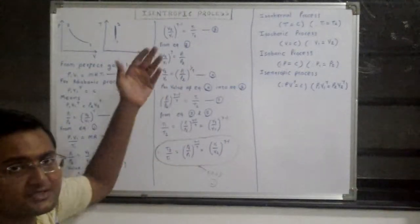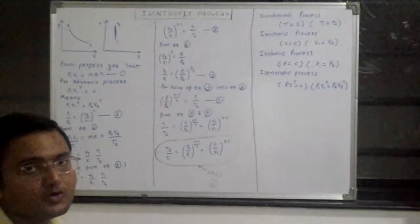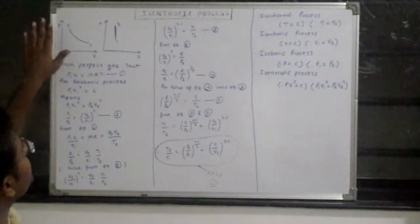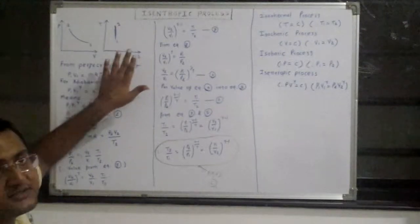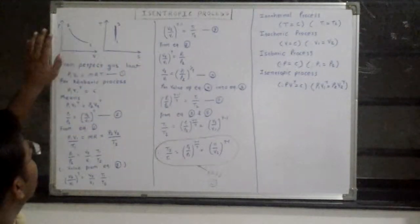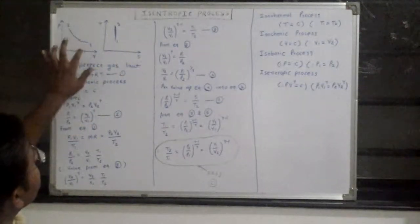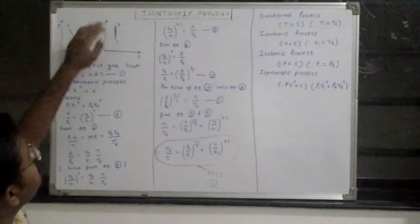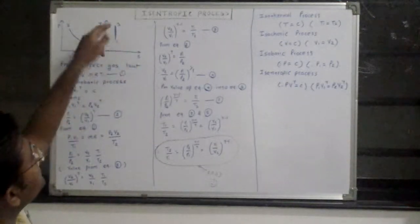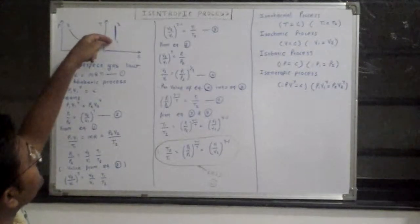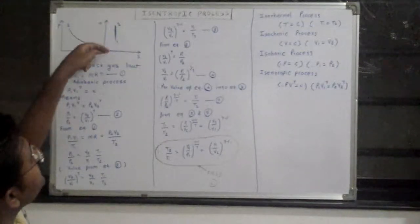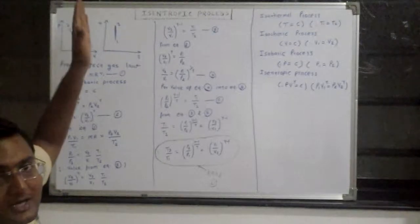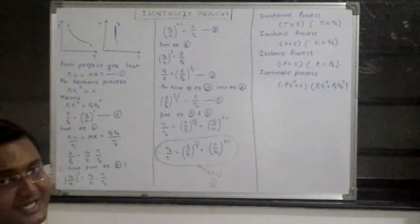So from where is this equation derived? In order to understand the isentropic process, I have drawn two diagrams: TV and TS. The TV diagram shows a curved line for the isentropic process, and the TS diagram is a straight vertical line because entropy remains constant — S1 equals S2. That is why it is a vertical line in the TS or HS diagram.